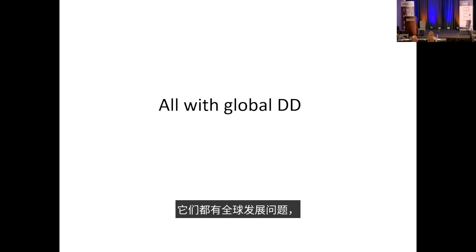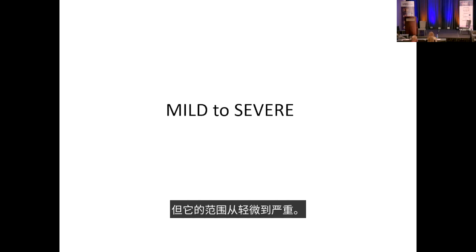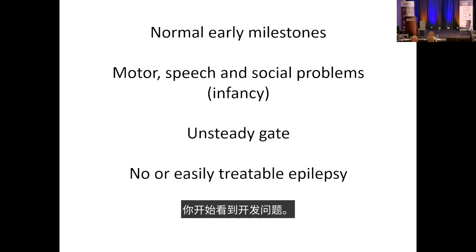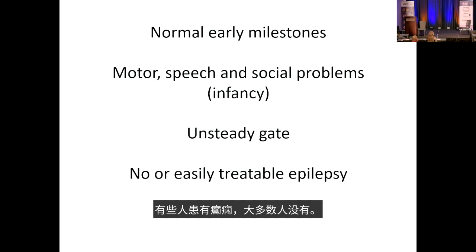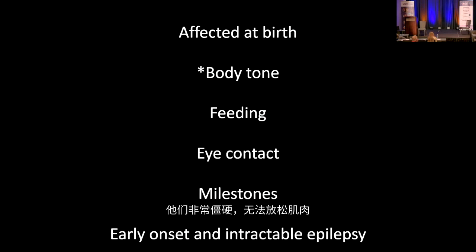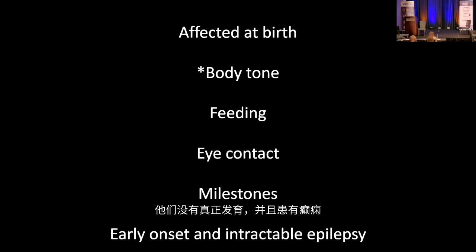At the mild end of the spectrum, early milestones are often normal, with developmental problems emerging in infancy. Patients typically learn to walk but with unsteady gait. Some have epilepsy, most do not, and seizures are generally manageable. At the severe end, patients are affected from birth — marked stiffness (hypertonia), inability to feed requiring a gastric tube, lack of eye contact, absent development, and early-onset refractory epilepsy.